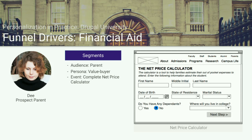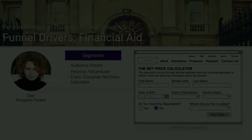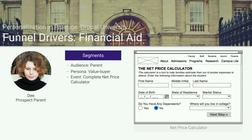Based on her completing that price calculator, we can really surface to Taylor's mom the things that are important to her as she comes back to the site. It's not just driving her towards a decision — it's when are financial aid deadlines, have you applied for these scholarships, really making Drupal U a better experience for their consumer parent and children than other competing universities, because presumably Taylor is looking at other schools as well.